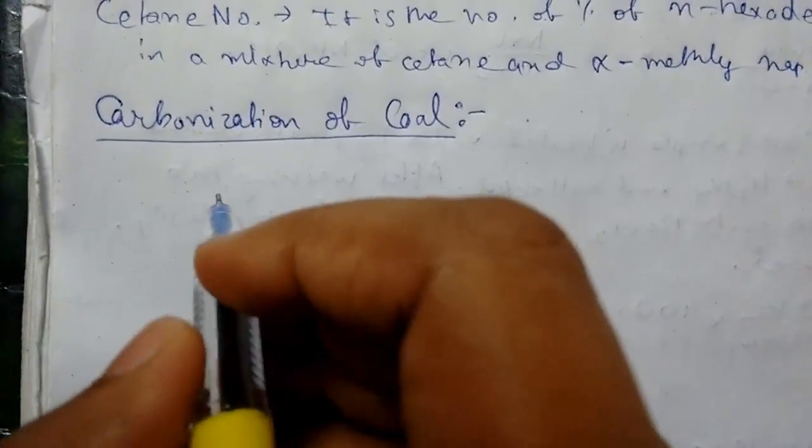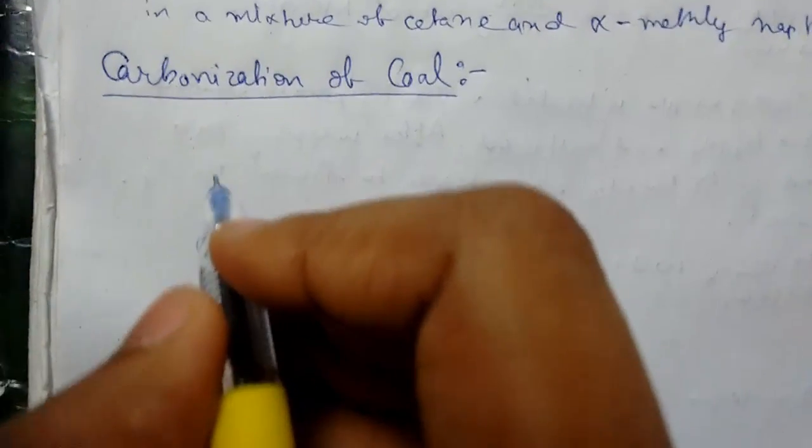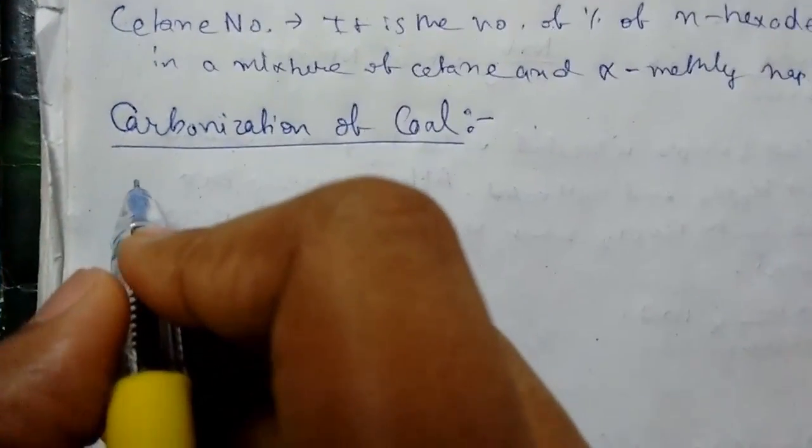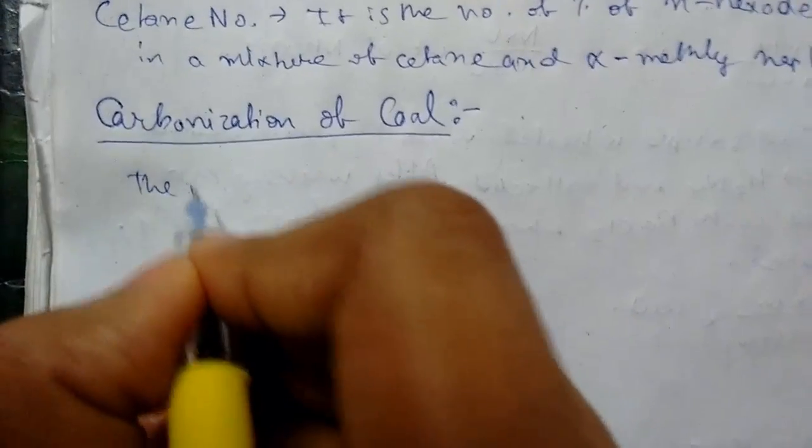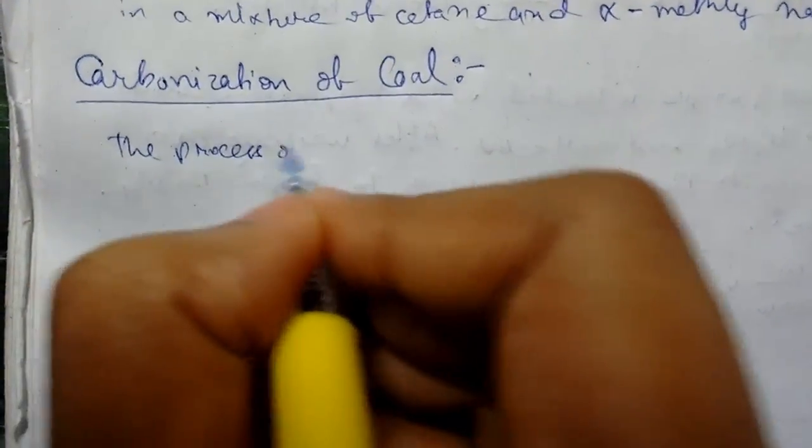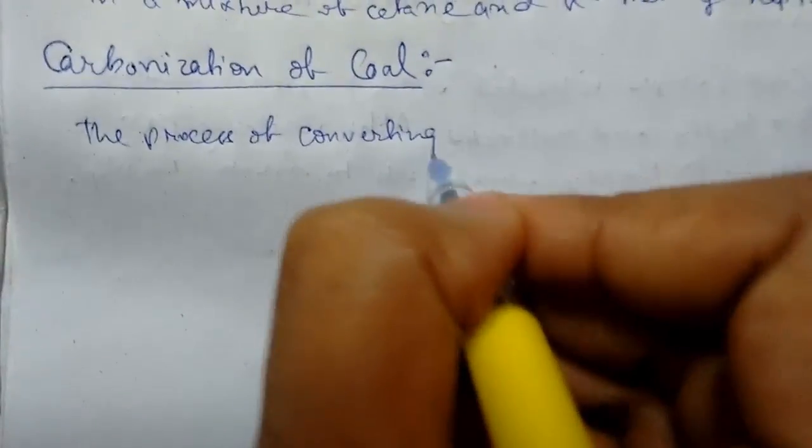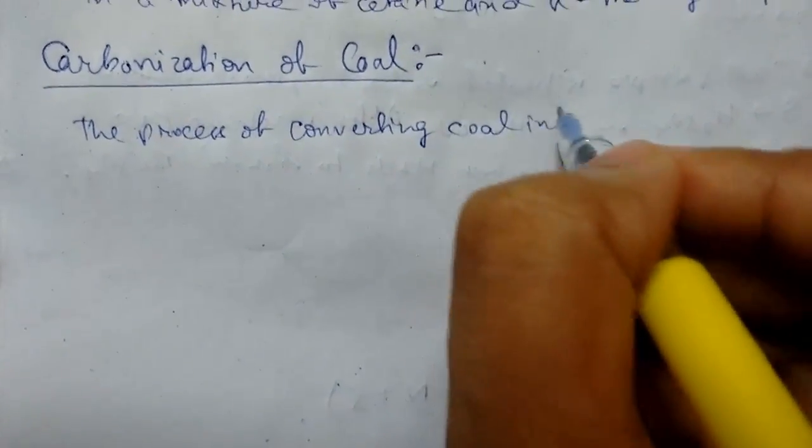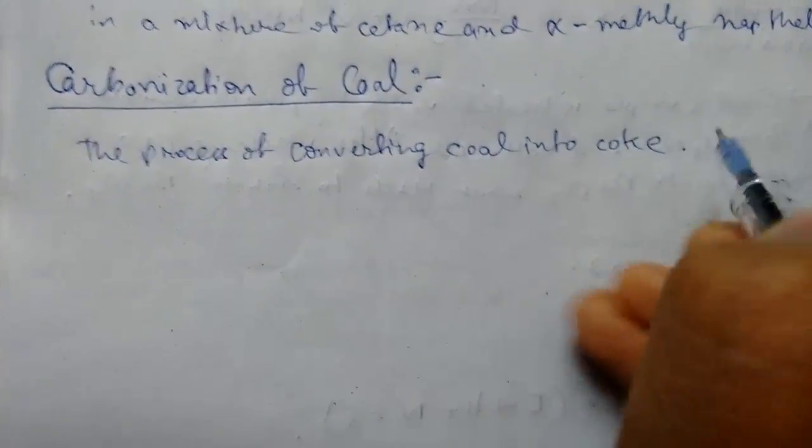Welcome back guys, so today we will be continuing fuel. Today we will be seeing carbonization of coal and its parts. So what is carbonization of coal? The process of converting coal into coke is called carbonization of coal.